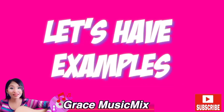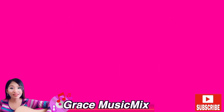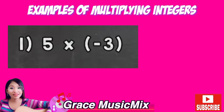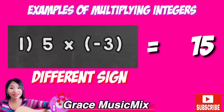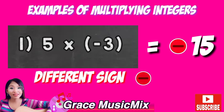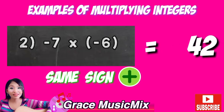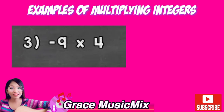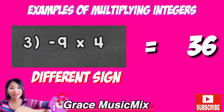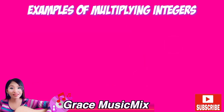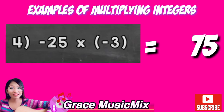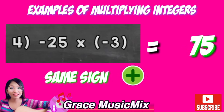Let's have examples. Example number 1: 5 times negative 3 — 5 times 3 is 15, different sign, negative — negative 15. Example number 2: negative 7 times negative 6 — 7 times 6 is 42, same sign is positive — positive 42. Example number 3: negative 9 times 4 — 9 times 4 is 36, different sign is negative — negative 36. Example number 4: negative 25 times negative 3 — 25 times 3 is 75, same sign is positive — positive 75.